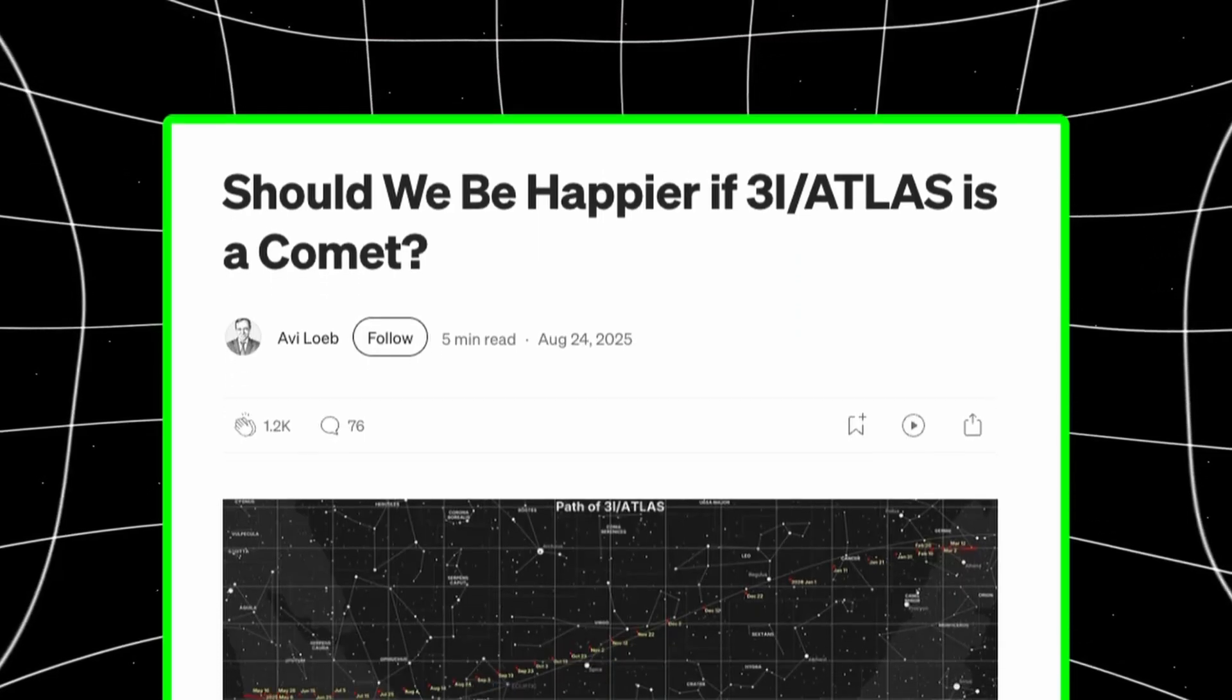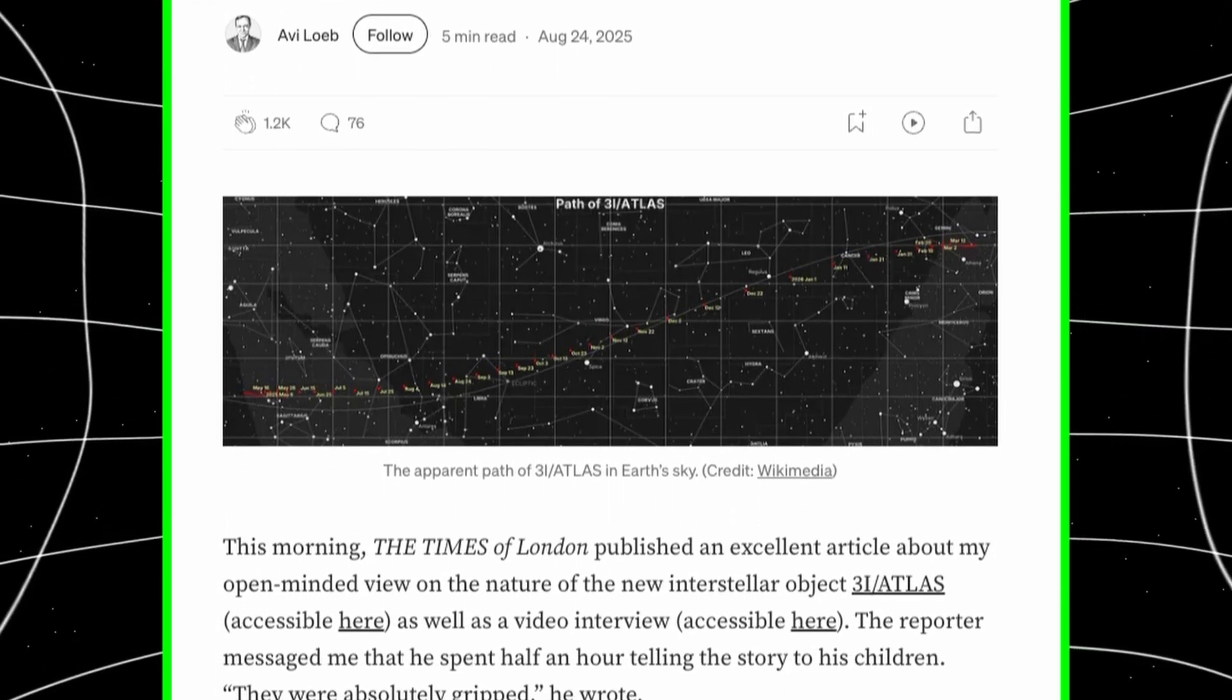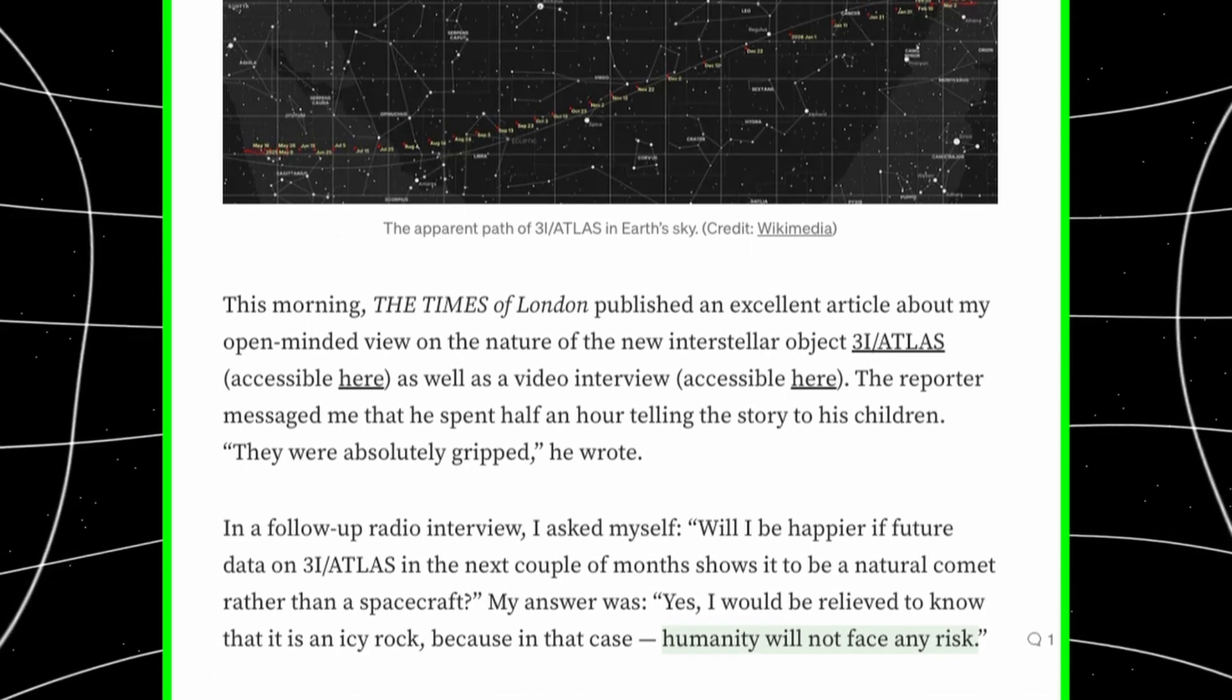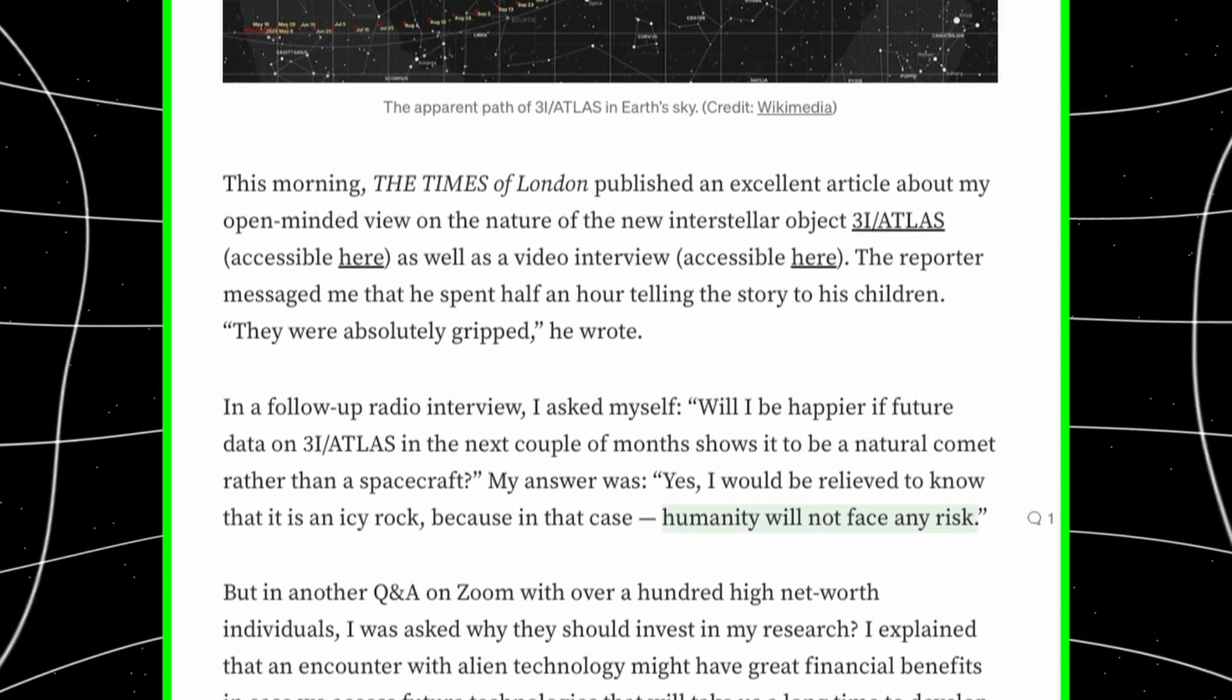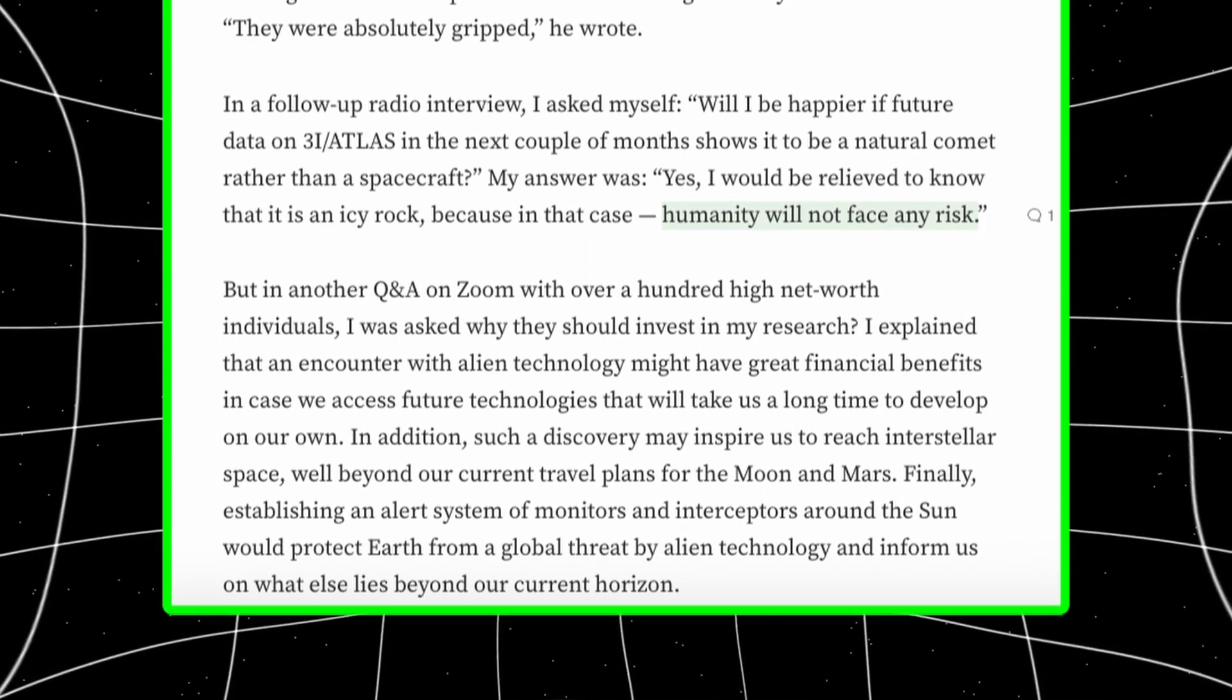Now let's talk about December 19th. Closest approach to Earth. This image isn't a single photo. It's a breakdown across multiple wavelength bands. Red, green, blue, combined with contrast enhancing filters.